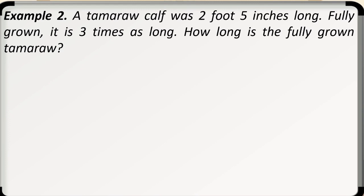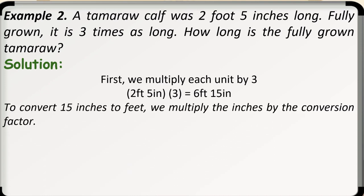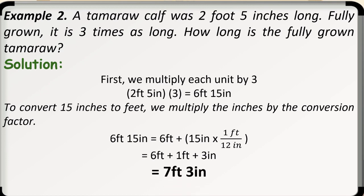First, we multiply each unit by 3. So, that is 2 feet and 5 inches times 3 is equal to 6 feet and 15 inches. To convert 15 inches to feet, we multiply the inches by the conversion factor. We have 6 feet and 15 inches is equal to 6 feet plus the quantity of 15 inches times the conversion factor 1 foot is to 12 inches. We have 6 feet plus 1 foot plus 3 inches is equal to 7 feet and 3 inches.